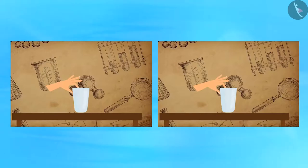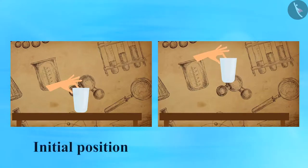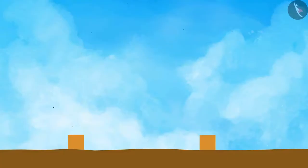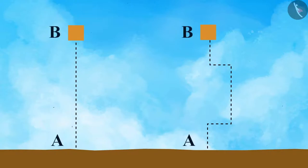When an object is raised to a certain height, then the work done on the object depends on the difference between the vertical heights of the initial position and final positions of the object, and not on the path taken by the object. Take a look at these two images, where two objects take two separate parts to reach from position A to position B. Here, AB is equal to H. In both the cases, the work done on both the objects is Mgh.